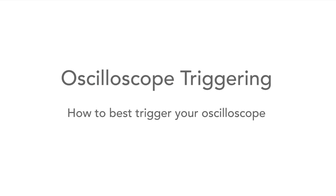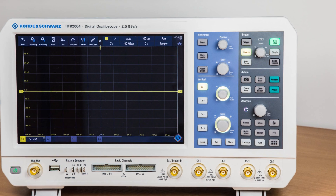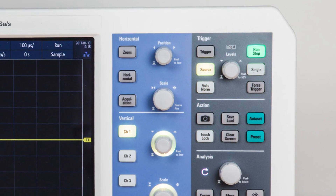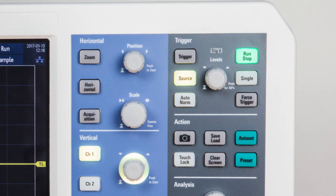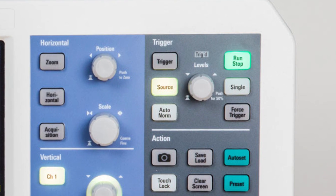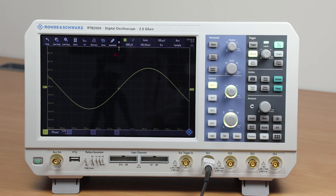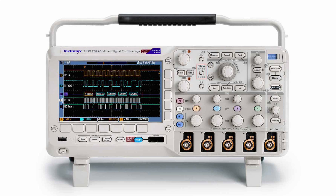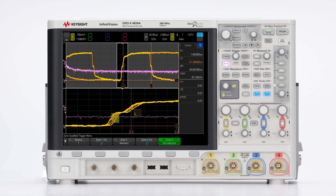When you're using an oscilloscope, one of the most important controls to understand is the trigger control. In this video, we'll look at how scopes are triggered, how to use the trigger function, and how the controls operate. We'll show you how it enables you to see a clear, steady image of repetitive waveforms, and how it also enables you to capture precisely the waveform you need for single events. We'll also describe some of the more advanced trigger facilities available in modern oscilloscopes.